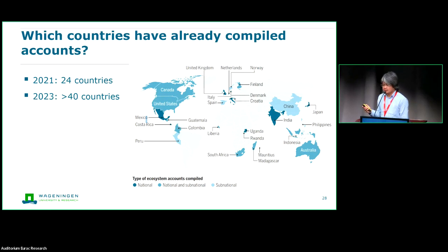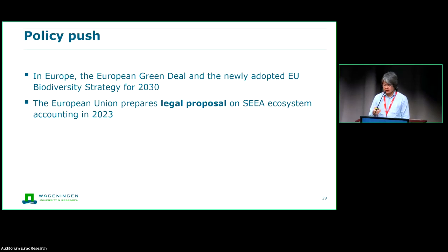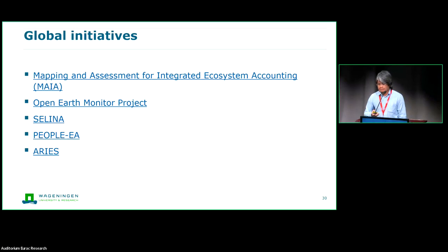There's a strong push for ecosystem accounting implementation. These are the current countries that have already compiled the accounts, with more to come in the coming years. The policy push includes the European Green Deal, and the EU is preparing a legal proposal for European countries to make this required. There are also many global initiatives implementing ecosystem accounting using Earth Observation, including the MAIA project and the Open Earth Monitor project.